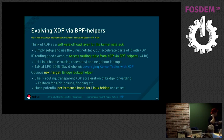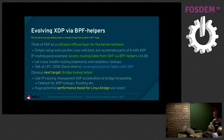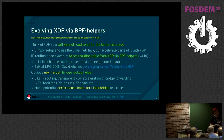The next obvious target is bridge lookup — you can have a helper that looks up in the bridge forwarding information base (FIB) table and accelerate bridge forwarding. This connects to accelerating into VMs: if your VMs are connected to a Linux bridge (which is not very fast), you could accelerate that directly from XDP without much additional user space code.